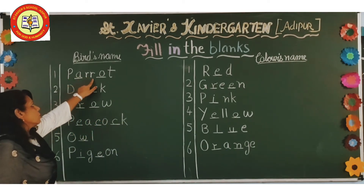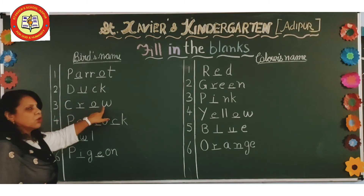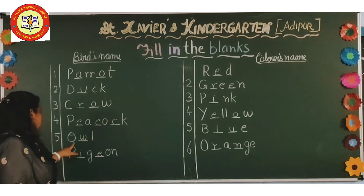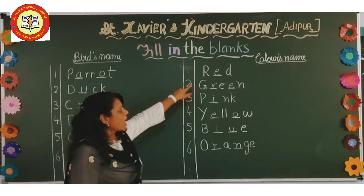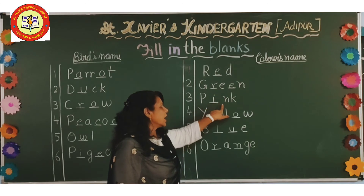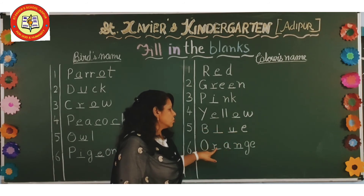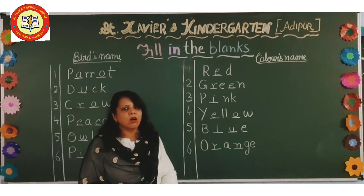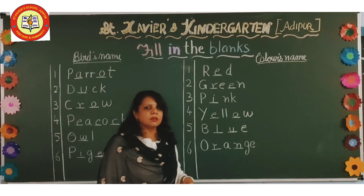Once again: P-A-R-R-O-T parrot, D-U-C-K duck, C-R-O-W crow, P-E-A-C-O-C-K peacock, O-W-L owl, P-I-G-E-O-N pigeon, R-E-D red, G-R-E-E-N green, P-I-N-K pink, Y-E-L-L-O-W yellow, B-L-U-E blue, O-R-A-N-G-E orange. So you have to fill all these fill-in-the-blanks. Then we have to do some another activity.